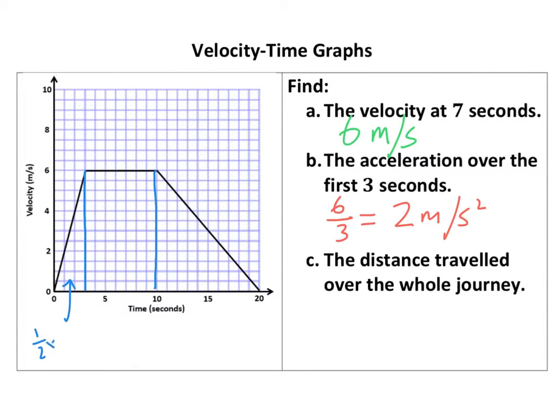So this bit is going to be a half times the base, which is 3, times the height, which is 6. This bit I'll write in there should be 7 times 6, and this bit is going to be a half times 10 times the height is 6. So there we go.